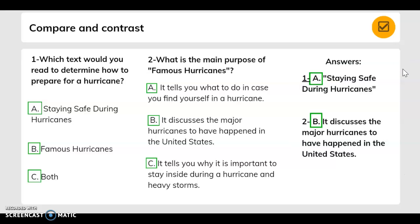If you said A for question one, which text would you read to determine how to prepare for a hurricane? Staying safe during hurricanes. You are correct. For number two, what is the main purpose of Famous Hurricanes? If your answer was B, it discusses the major hurricanes that have happened in the United States, you are correct.